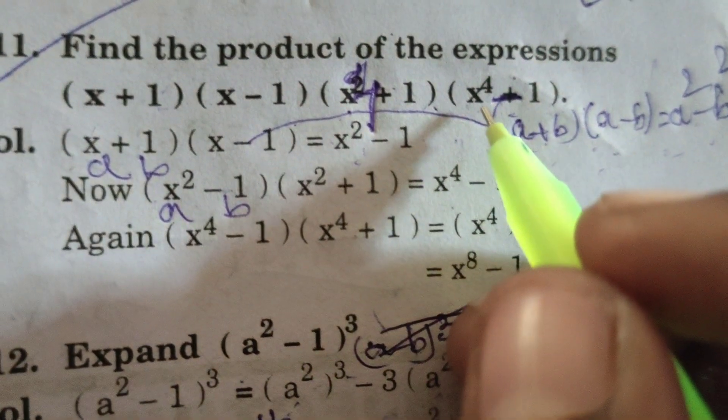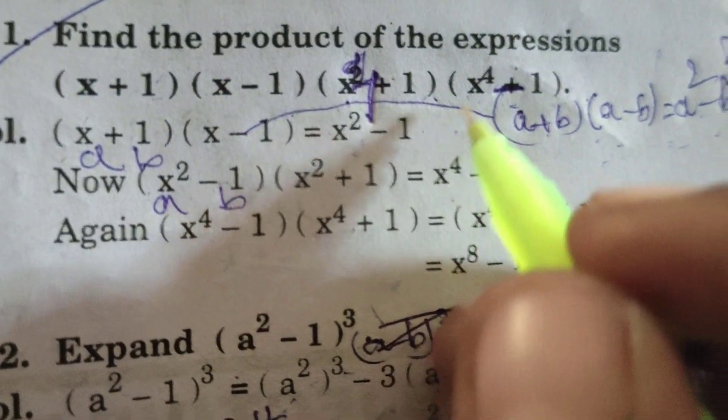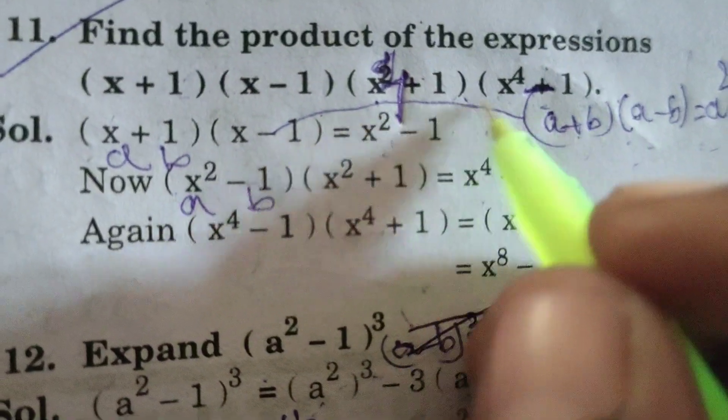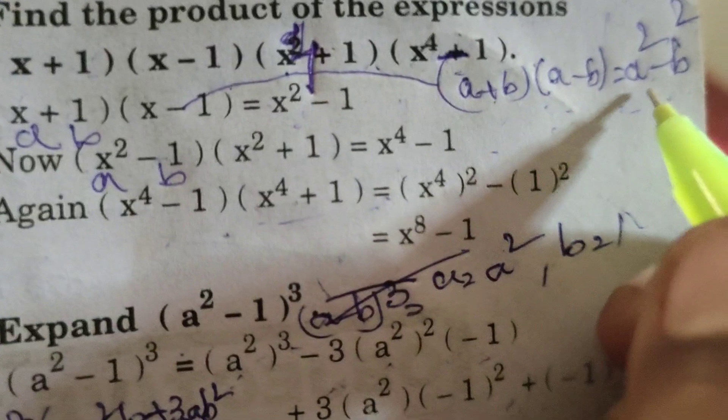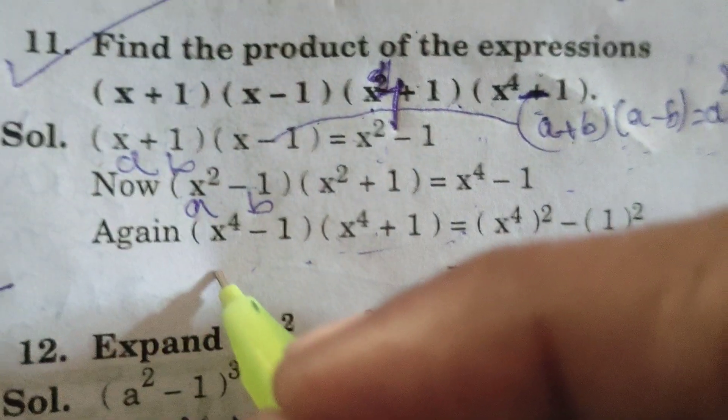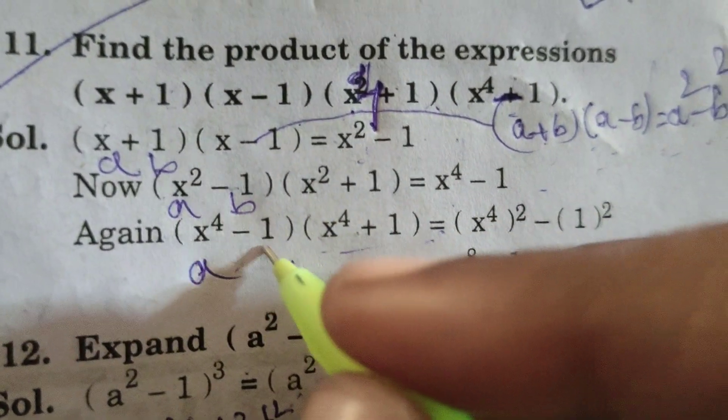Again, here the given problem. x power 4 minus 1, x power 4 plus 1. A plus b into a minus b, here using formula a square minus b square. Here, a means x power 4, b means 1.